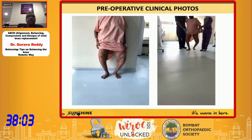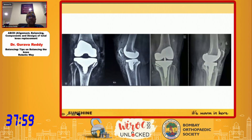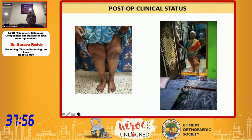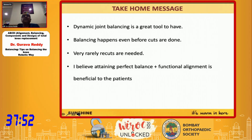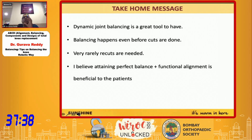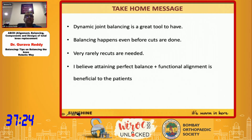This is the pre-op gait and pre-op patient, and this is the post-op result. The take-home message: dynamic joint balancing is a great tool. Balancing happens even before cuts are done, and re-cuts are very rarely needed. Attaining perfect balance plus functional alignment is beneficial to patients because you are cutting less soft tissue. In gross deformities, soft tissue balancing is still needed, but by minimizing it and altering implant positioning, you achieve perfect balancing. Maintaining the milieu intérieur of the joint means mid-flexion instability will be a thing of the past.